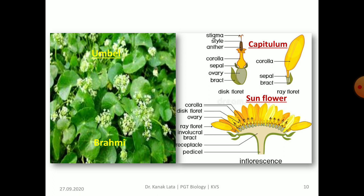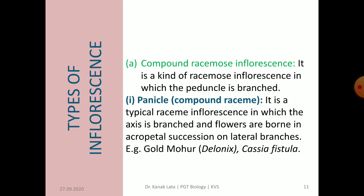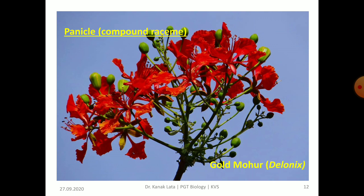Now we will discuss compound racemose inflorescence. The difference between simple and compound racemose is that in compound racemose the peduncle is branched, whereas in simple racemose the peduncle is unbranched. The first type is panicle, also called compound raceme, in which the axis is branched and flowers are arranged in acropetal succession on lateral branches. It is seen in Gulmohar, that is Delonix, and Cassia fistula. In the given figure, you can observe the panicle or compound raceme of Gulmohar, with lateral branching and flowers in acropetal succession.